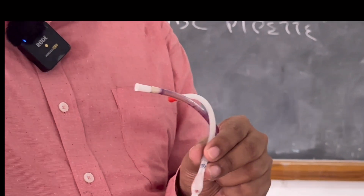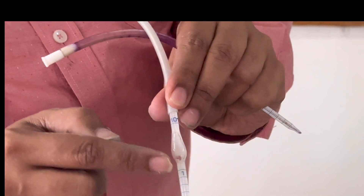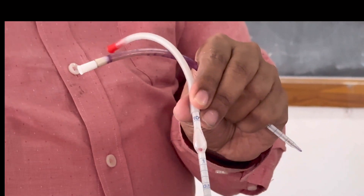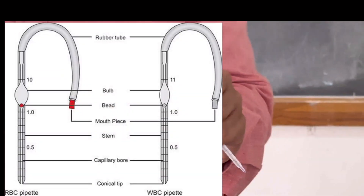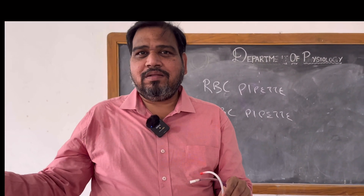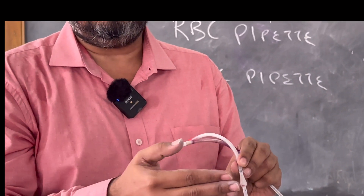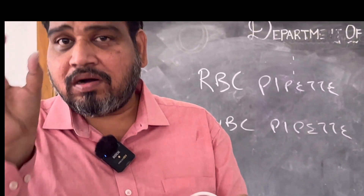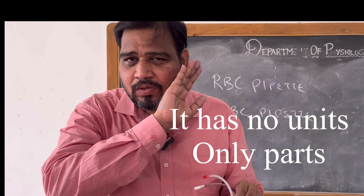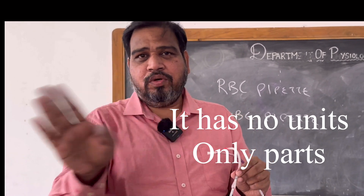With the markings also you can tell whether it is RBC or WBC. Just concentrate: 0.5, 1, 101. If 101 comes, that is RBC pipette. In the exam they will ask about 0.5 — do not tell any unit like millimeter, centimeter, or micrometer. Please don't tell any unit because these are just parts. Based upon the ratio it is 0.5 parts, 1 part, 101 parts. Please don't say 1 micrometer or 101 micrometer — no units.